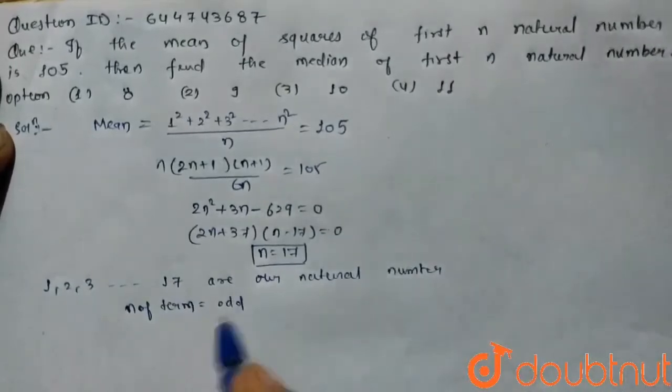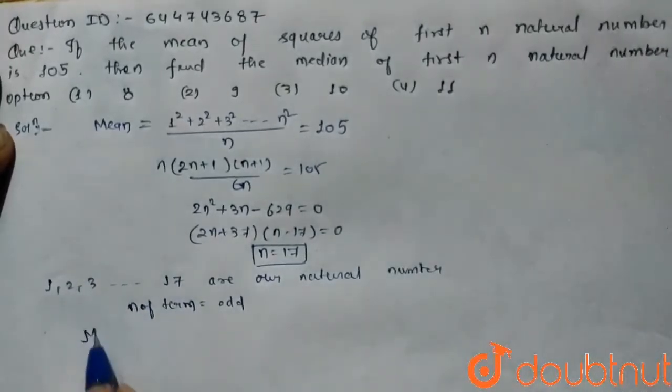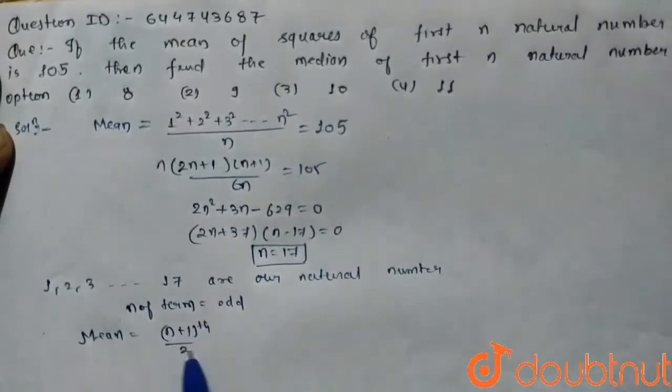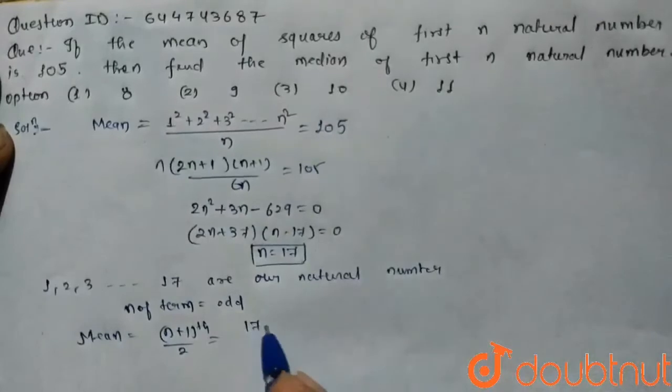Is odd, then median equals the (n+1)/2 term. It means (17+1)/2, which is the 9th term.